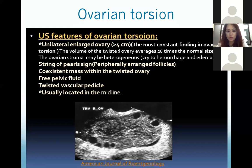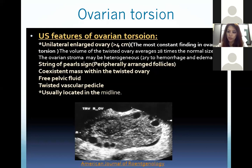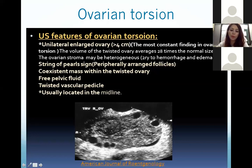The unilateral enlarged ovary measuring more than 4 centimeters is the most constant finding in ovarian torsion. The volume of the twisted ovary averages 28 times the normal size. The ovarian stroma may be heterogeneous. The string-of-pearl sign refers to peripherally arranged follicles within an enlarged ovary. There may be a co-existent mass within the twisted ovary, peripelvic fluid as a reactive finding, and a twisted vascular pedicle.